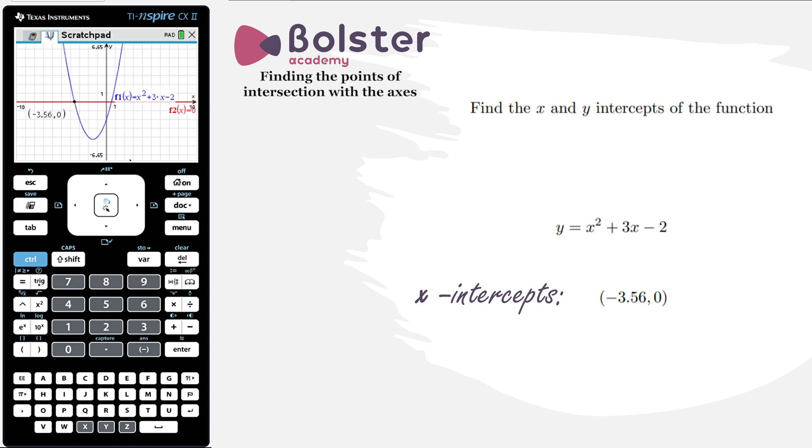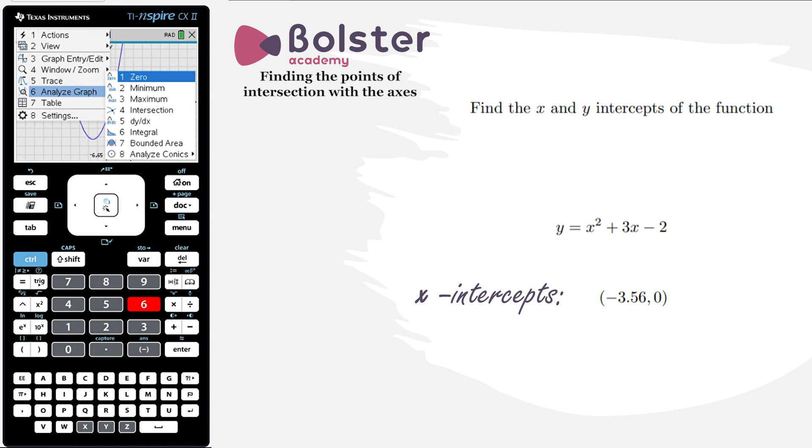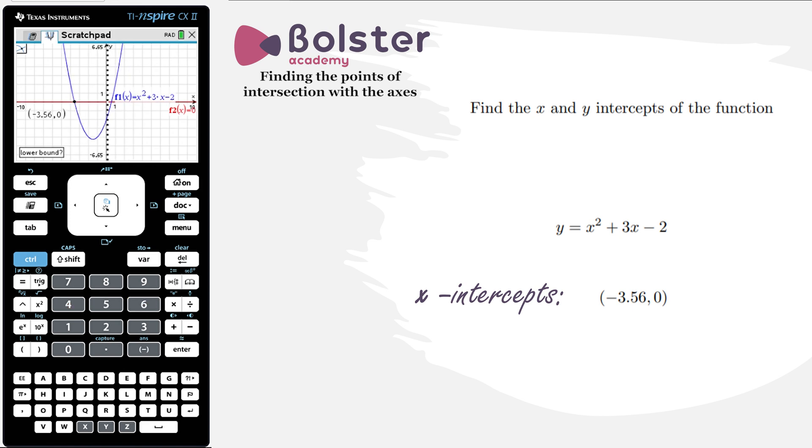We can see we've got a second intercept, so we go and do the exact same thing again. Analyze graph, intersection point, and just choose the upper and lower bounds appropriately. I get my second intersection point at 0.562.